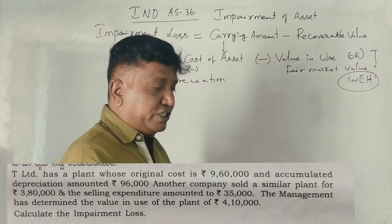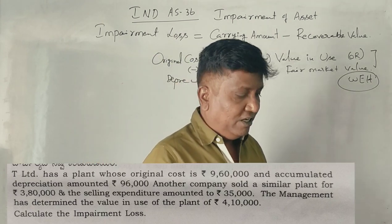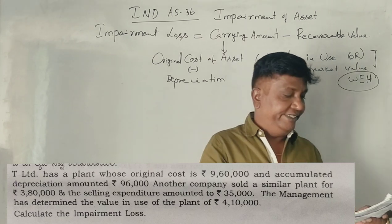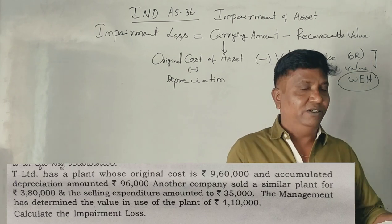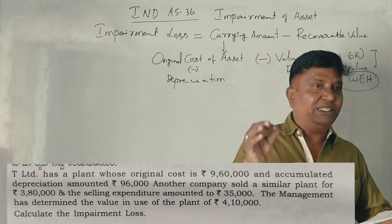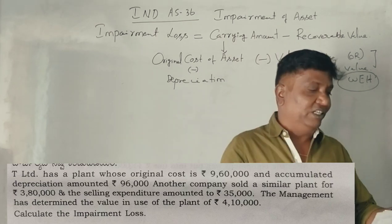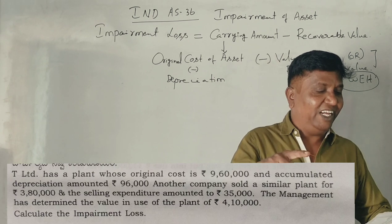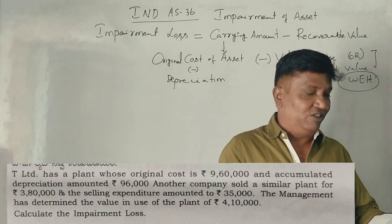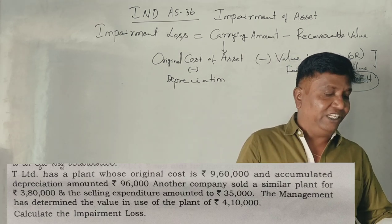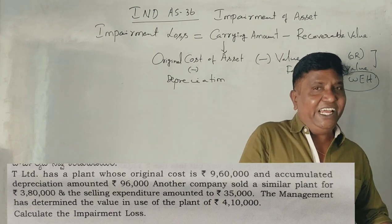This is a 2019 question paper, question number 6, worth 6 marks. T Limited has a plant whose original cost is ₹9,60,000 and accumulated depreciation amounted to ₹96,000. Another company sold a similar plant for ₹3,80,000, and the selling expenditure amounted to ₹35,000.